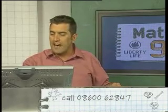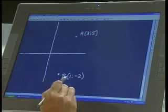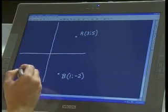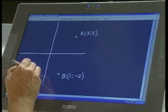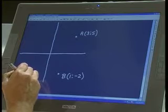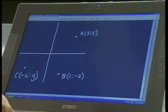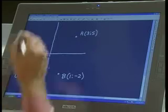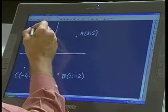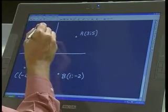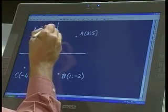Goodnes gave me the coordinates A, which is 3 and 5, B, which is 1 and minus 2. They told us also that C is a point which has coordinates minus 4 and Y.